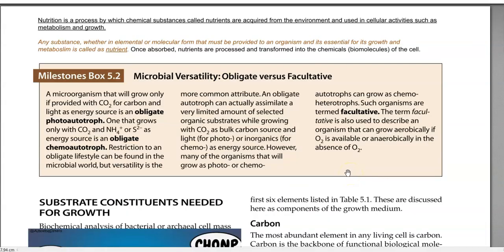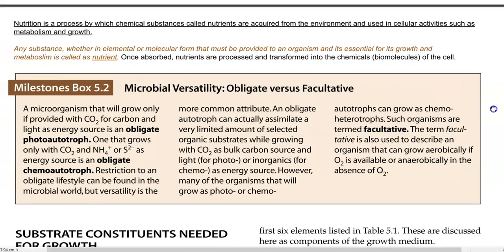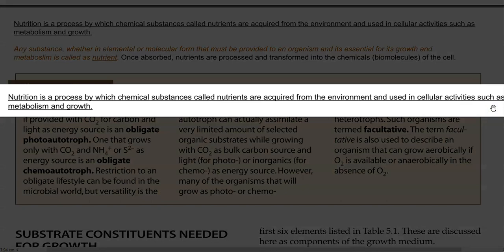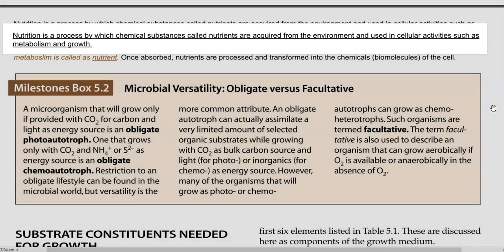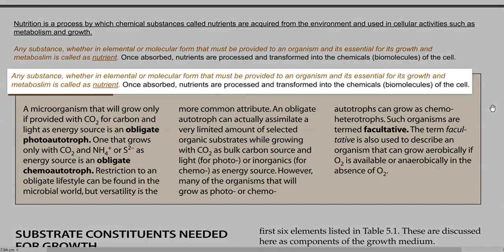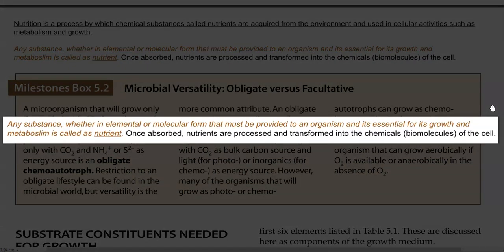We will now learn in detail about the different nutrients functioning in living organisms. Nutrition is a process by which chemical substances called nutrients are acquired from the environment and used in cellular activity, especially in metabolism as well as in growth. A nutrient is any substance — whether used in an elemental form, such as sulfur, or a molecular form, such as water — that must be provided to an organism and is essential for its growth and metabolism.